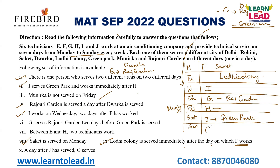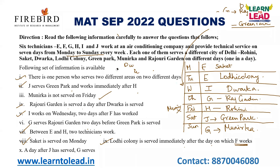J serves Green Park and works immediately after H. Rajori Garden is served a day after Dwarka is served. G serves Rajori Garden two days before Green Park is served. Between E and H, two technicians work. Using these clues, H is placed, then Munarka is positioned accordingly. This is how you should complete your table: enter direct data first, then use derived clues to fill in the rest.